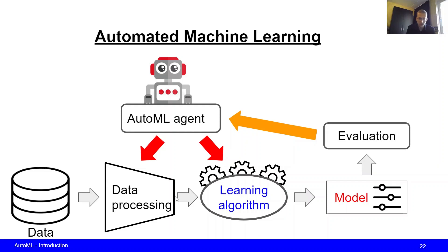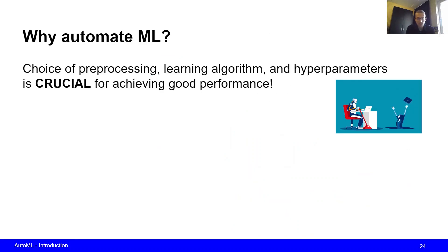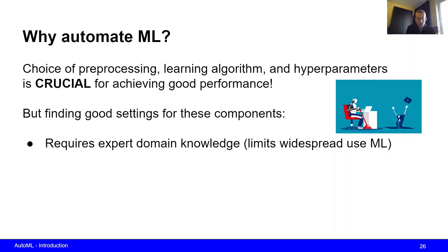Now of course a question that you may have is why should we be interested in this and why is this important. The key insight is that the choice of the preprocessing, the learning algorithm, and the hyperparameter values is crucial for achieving good performance. The difference between a state-of-the-art model and a mediocre model could be the difference in these choices. Finding good settings for these components however requires expert domain knowledge. This is something often done by data scientists who understand the machine learning algorithm and understand the influence of the different choices on the performance, and based on this the human can then tune these things in order to maximize the performance.